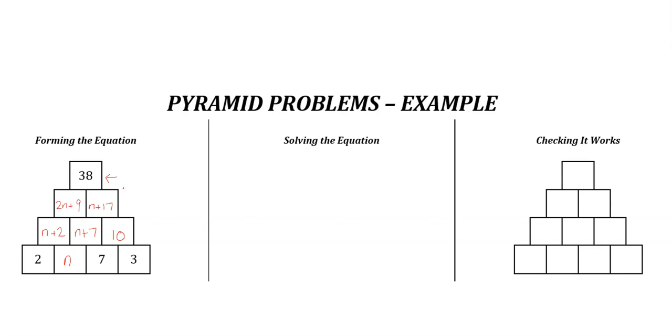and the 9 and the 17 makes 26. Okay, so our equation is 3n plus 26 must equal 38, since that's the number in the top. Now we need to solve this equation. Well, this is like a